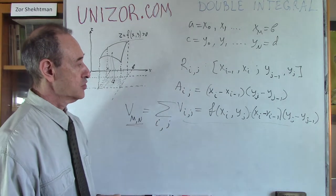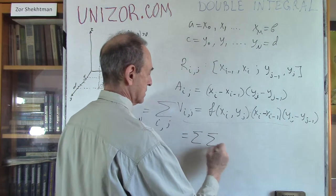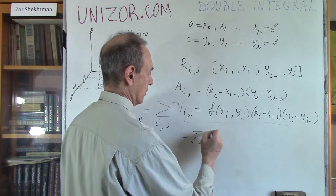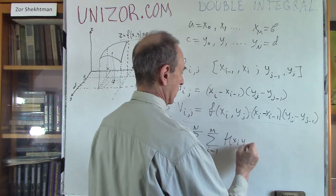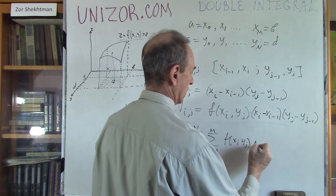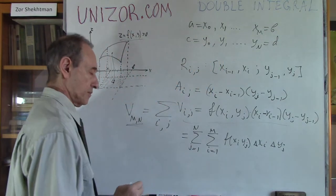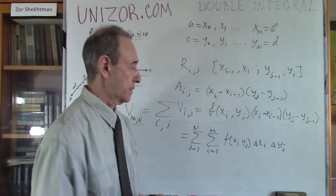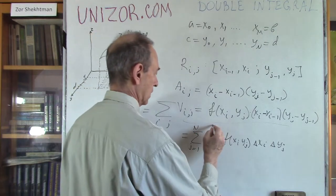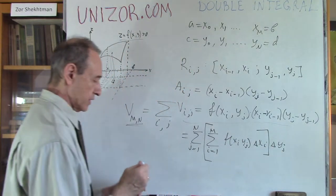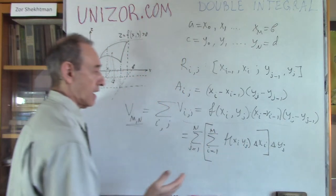Let me change the notation slightly. I will use a double sigma — first summing by i, then by j — of f(x_i, y_j) · Δx_i · Δy_j. I use this notation because it's a little more familiar.